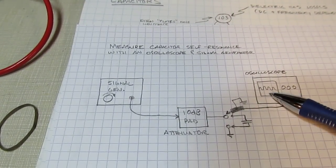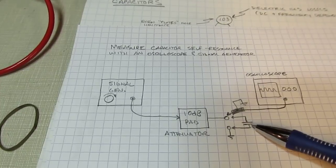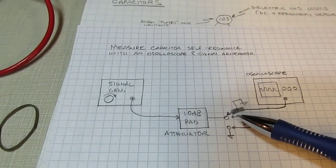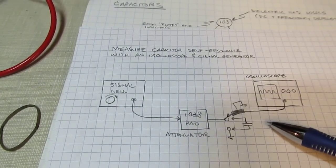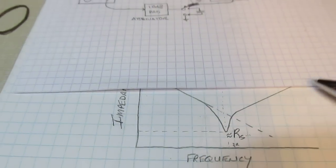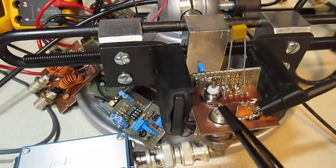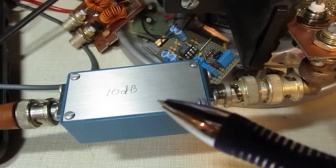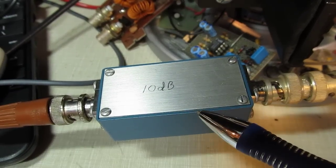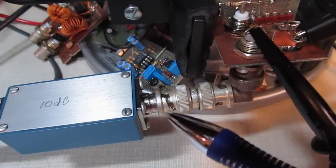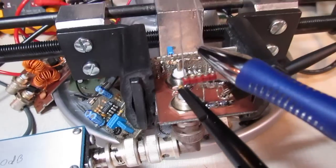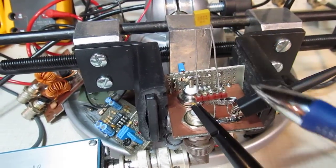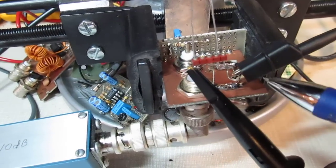As you turn the frequency up on the signal generator, the impedance of the capacitor starts going down, so the voltage you see across it starts going down. Using the pad makes it a little more predictable since you may not know the output impedance of your signal generator — that's why it's generally a good idea. You watch the magnitude of the signal across the capacitor as you sweep frequency.